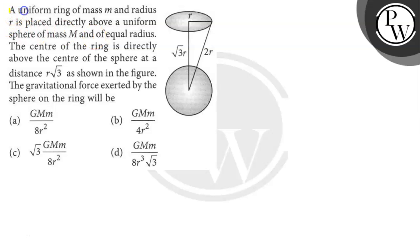Hello, let's read the question. The question says here: A uniform ring of mass m and radius r is placed directly above a uniform sphere of mass M and of equal radius. The center of the ring is directly above the center of the sphere at a distance r root 3 as shown in the figure.